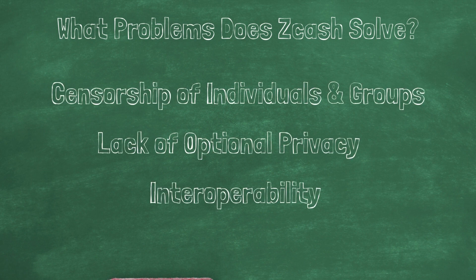The primary method of oppression and censorship of ideas is financial. Funding for organizations and people is key to freedom of speech. Because Zcash has complete end-to-end privacy — both sender and recipient details, including the amount being transferred, are protected — lack of optional privacy on transparent chains means personal and business financial data is leaked to third parties, criminals, and adversarial nation states without user consent.